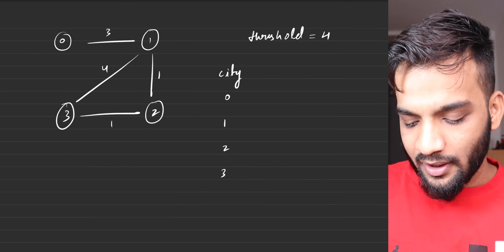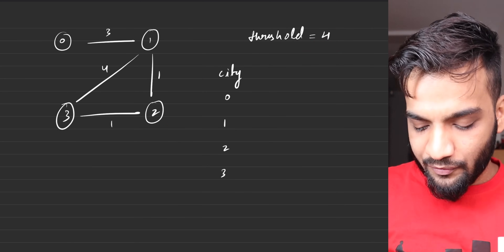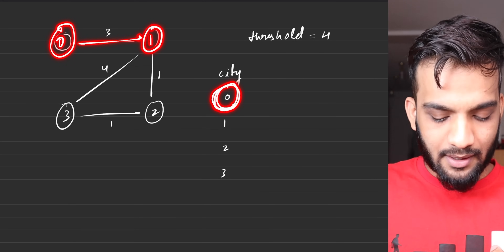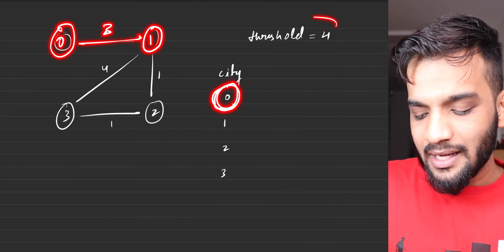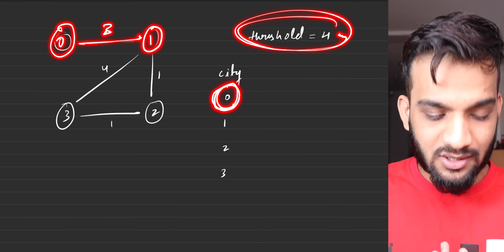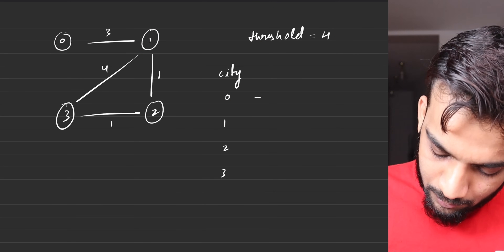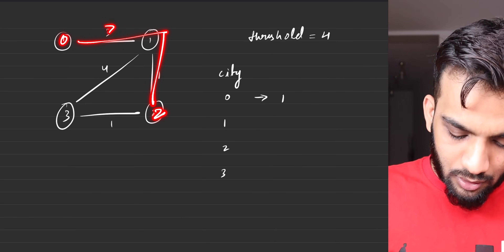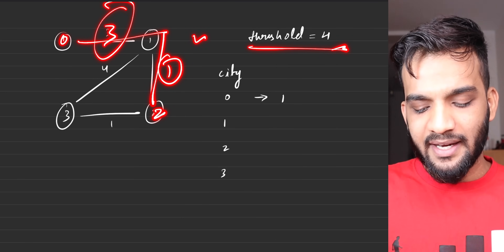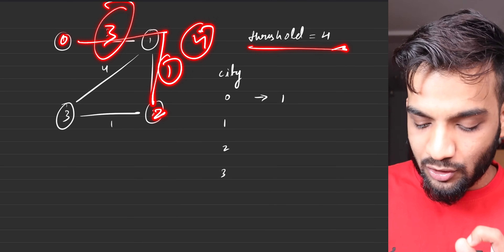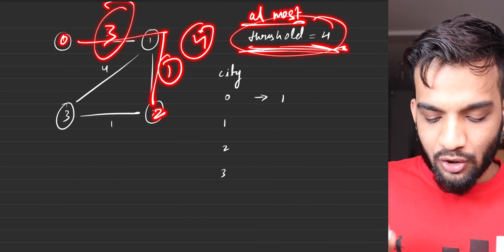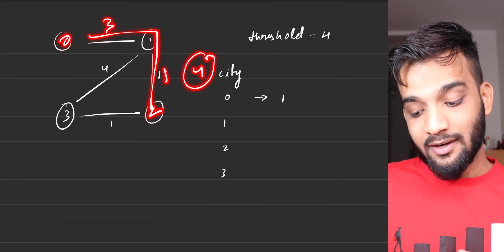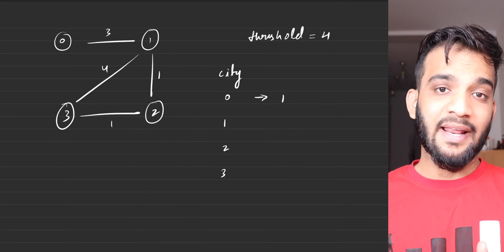Let's understand what the question states. Imagine this is an undirected graph and I'm giving you threshold 4. From city 0, if you want to go to city 1, the shortest path takes a distance of 3 — that is under the threshold, so I can reach from 0 to 1. Now let's try to reach 2: the threshold is 4 and I'm taking exactly 4, which is okay because you've been told at most the threshold value. So from 0 to 2 I'm using 3 plus 1 which is 4, so I can also reach 2.